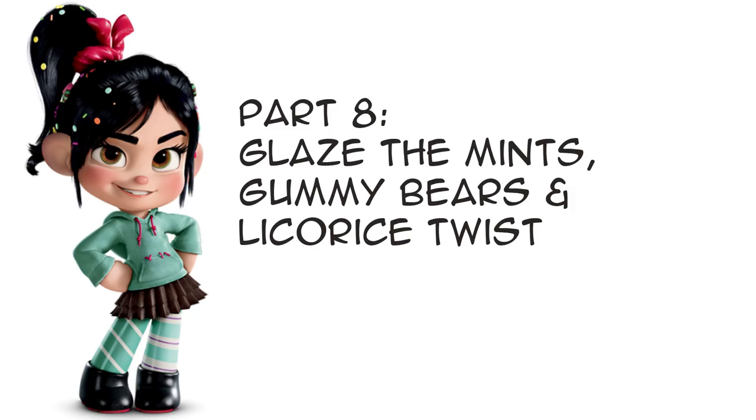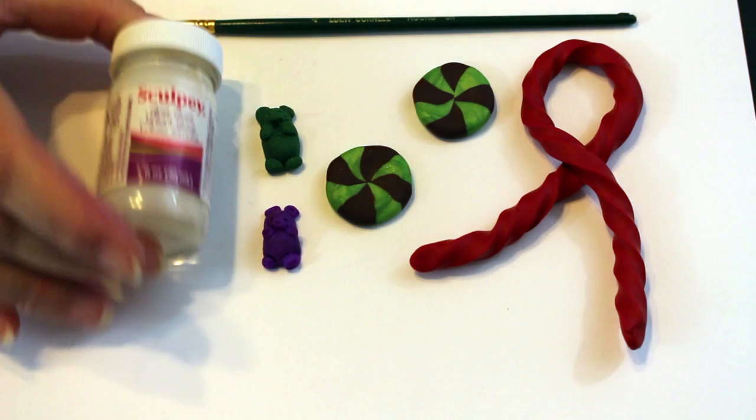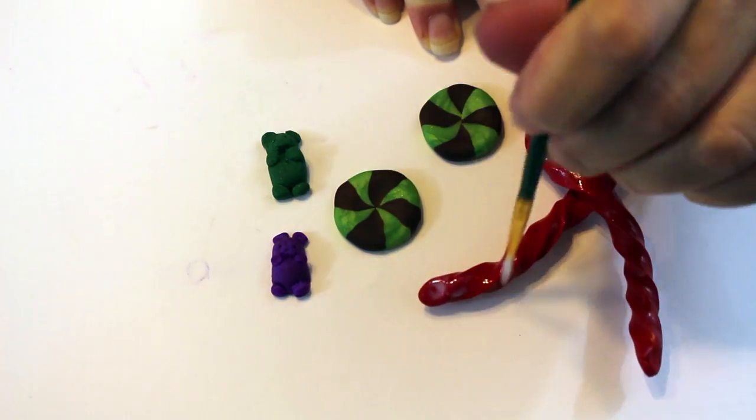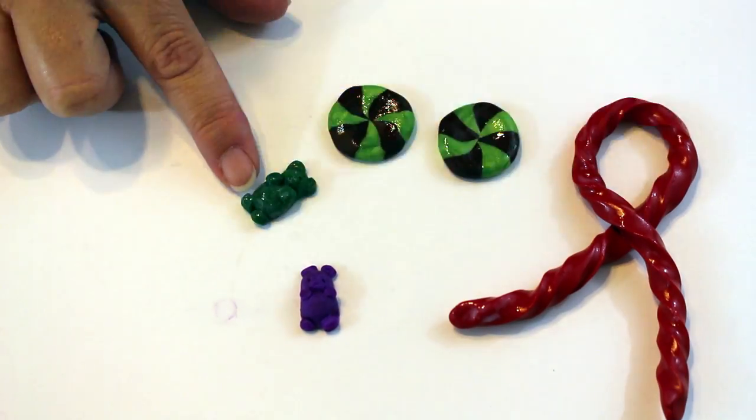Part 8: Glaze the mints, gummy bears and licorice twist. The other candy pieces do not need to be glazed. They will look more realistic if they are matte.